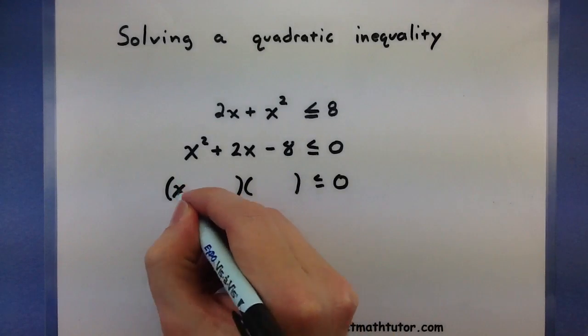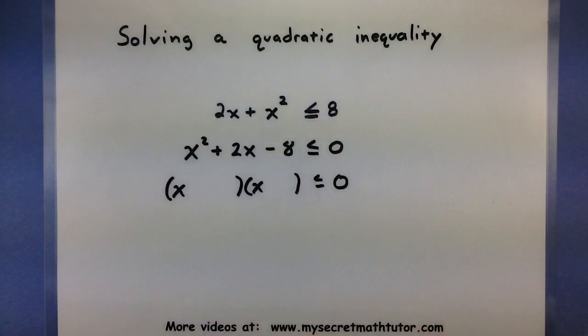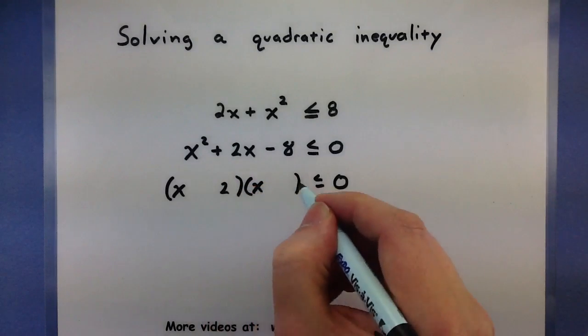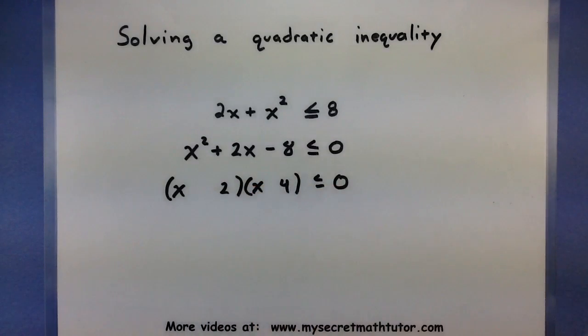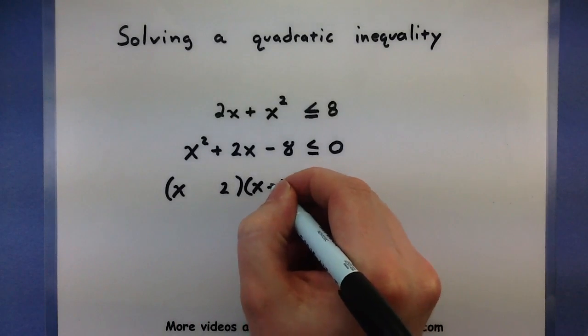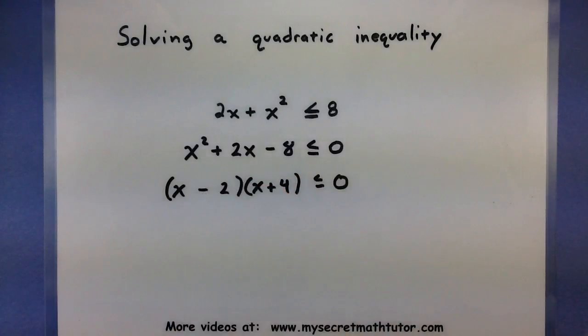So let's see, I got my x times x, that would give me an x squared. Let's see, 2 times 4, that would give me an 8. Looks like my inside term is a positive 2, so I'll need a positive 4 and a negative 2 to do that.